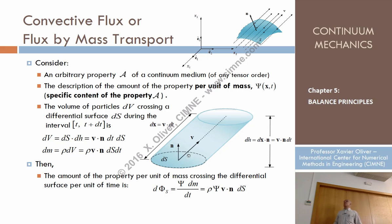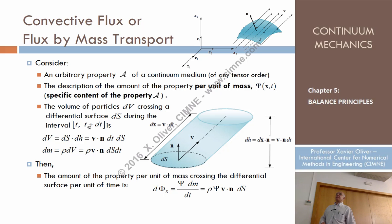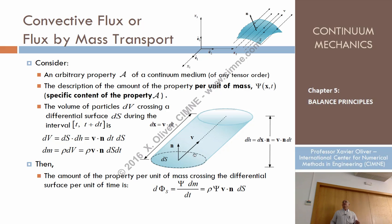This volume is a cylinder with base dS and height equal to the projection of the displacement onto the normal N, which is v·n·delta t. So the volume occupied by all particles that crossed dS in the time interval is v·n·delta t·dS. The mass of these particles is then rho times this differential volume, giving rho·v·n·dS·dt.